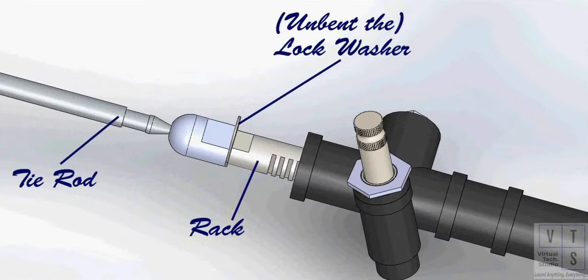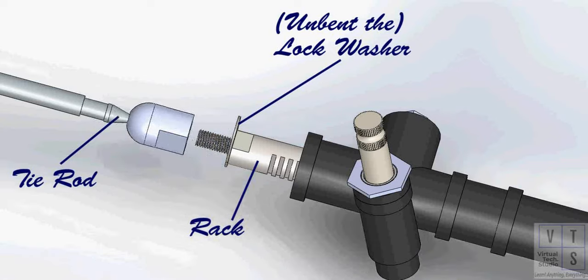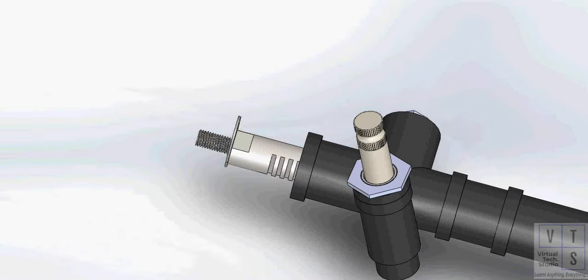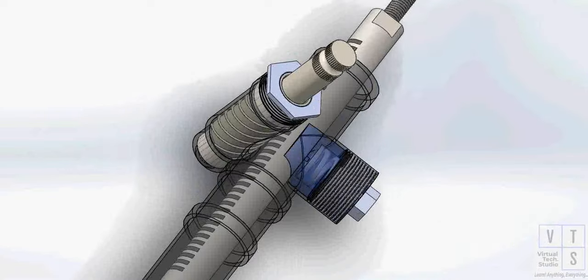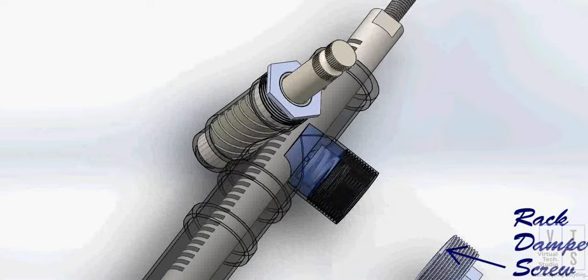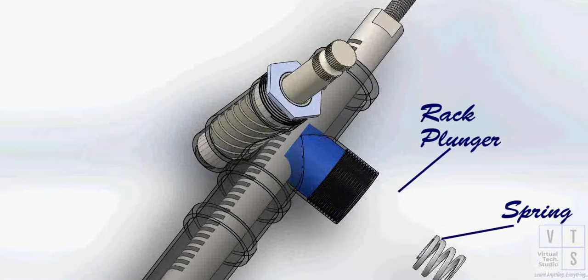Unbend the bent part of tie rod lock washers and remove tie rods from the steering rack. Also, remove the tie rod lock washers. Next thing to come out is the rack damper screw followed by rack plunger spring and the rack plunger.